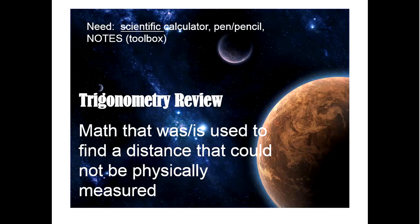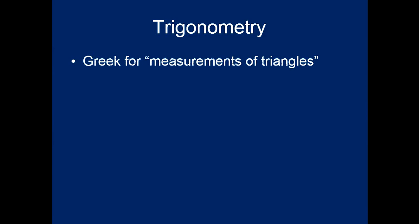So what was trig used for? Well, it's used to find a distance that could not be measured physically. So what this allowed astronomers to do is measure the distance from here to the moon, which is pretty awesome. Trigonometry is Greek for measurements of triangles.